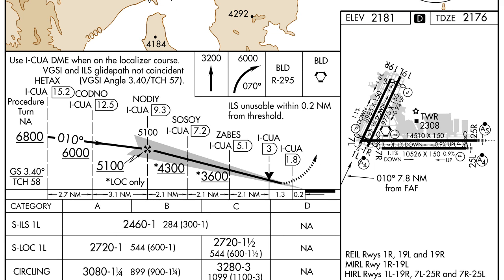If the approach does not contain a procedure turn, only the inbound course is shown, in this case 0-1-0.